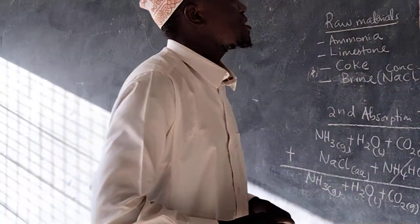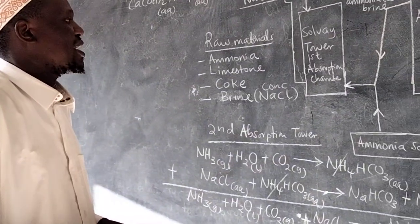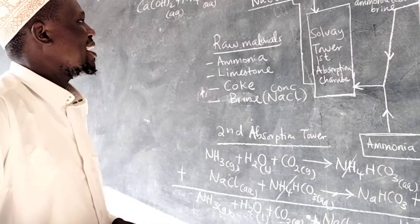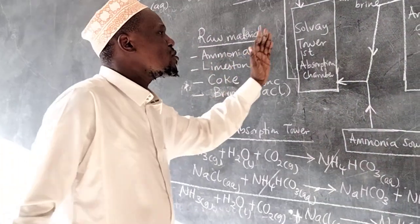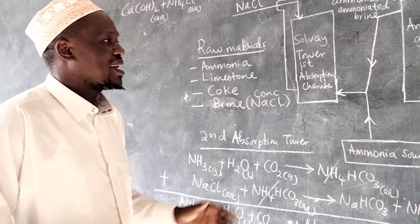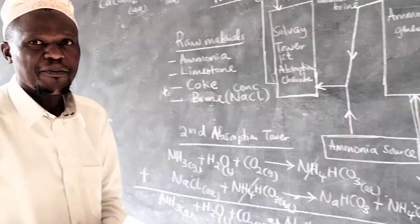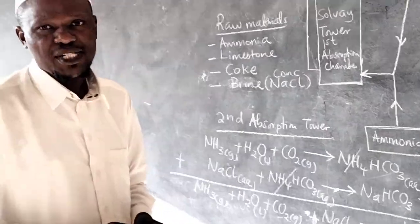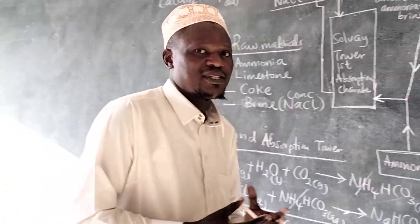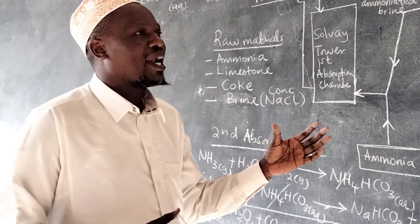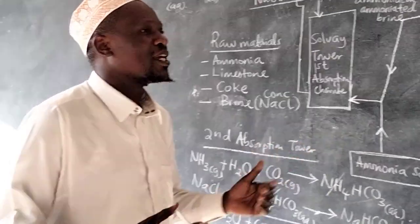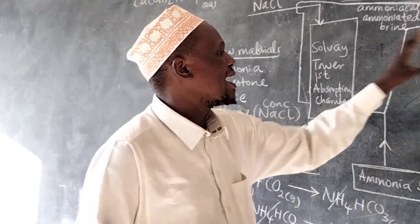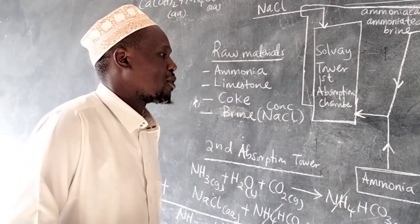Basically, that is the Solvay process from beginning to end. Because this is an industrial plant, it must be situated in a place with a good supply of water, because the process produces a lot of heat and cooling is required. Water is needed for cooling in the Solvay process.